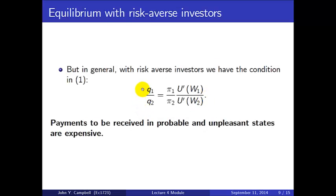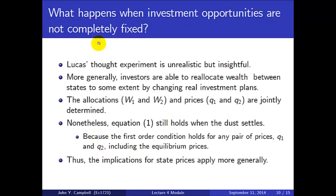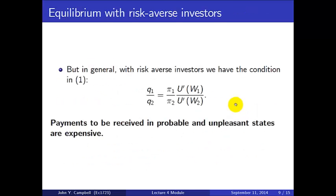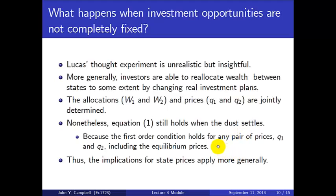In general, with risk-averse investors we have the richer condition, which can be summarized in plain English: payments to be received in probable and unpleasant states — states with high marginal utility of wealth — are expensive. In practice, investment opportunities are not completely fixed, so investors can reallocate wealth between states by changing real investment plans, and W1, W2, q1, and q2 are jointly determined. But the first-order condition still holds when the dust settles, because it must hold for any prices q1 and q2, including the equilibrium prices.